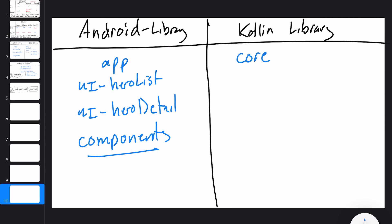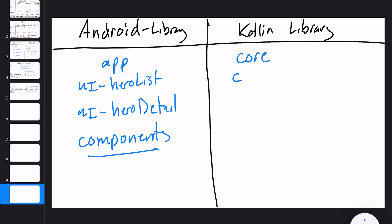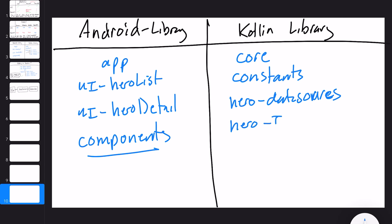On the Kotlin library side, we're going to have a core module containing all core data structures — things like data state and progress bar state that are used in every use case, every view model, basically every module. The point is to make it as small as possible to keep build time down. Next is a constants module — used probably in some modules but not all — containing network constants, caching constants, and that kind of stuff. Then we have hero data sources, hero interactors, and hero domain.